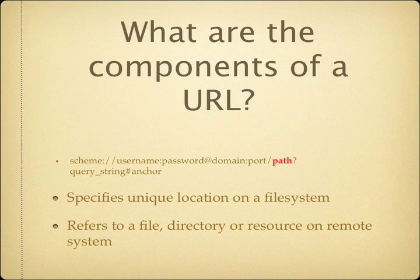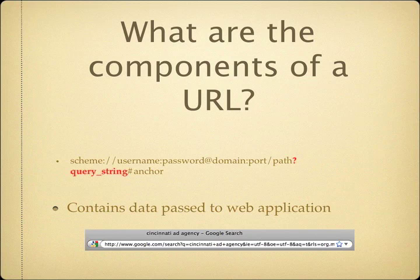Next we have path. The path is the actual specific location on the file system, and typically this refers to a file, a directory, or some resource. So if you're going to access the index.php file on creativedepartment.com, you could physically type that in and it will return the value of that file. Next we have the query string — this is the crazy string of data that sometimes you see when you access Google or other websites, typically denoted with a question mark. The query string contains variables and data that get passed into the web application, and then the web application evaluates those values and does stuff based on that.